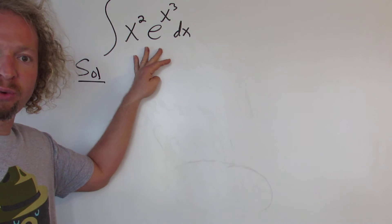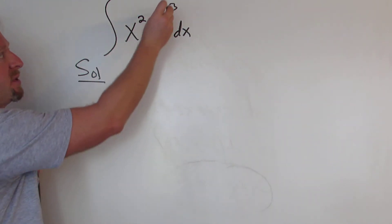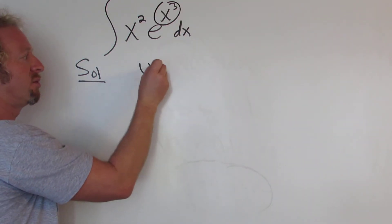We're going to do this via u-substitution. So we'll start by calling this piece here u. So u is equal to x cubed.